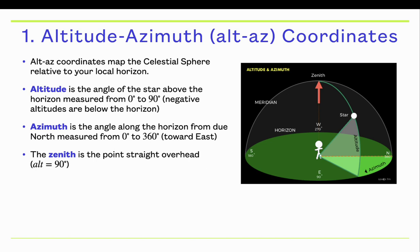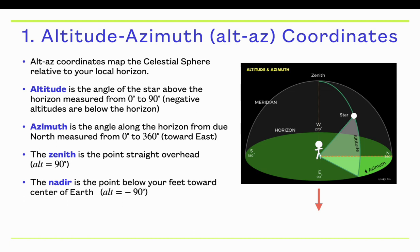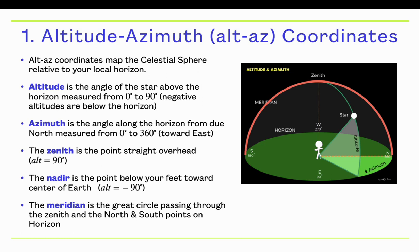The zenith is the point directly above your head, and it has an altitude of 90. It doesn't matter what the azimuth is — it all maps to the same point. The nadir is the point directly below your feet, so it has an altitude of negative 90 degrees. The meridian is a great circle that goes from due north to the point straight over your head to due south. The meridian is very useful in astronomy because you usually get the clearest view of stars, planets, and galaxies when the object is near the meridian — that's usually the best view because it's the highest altitude.